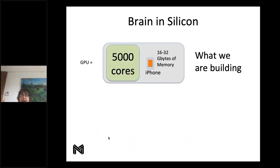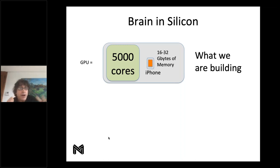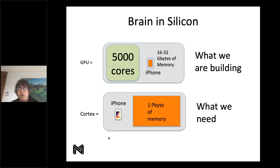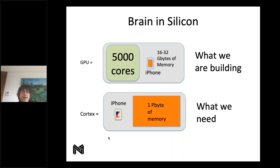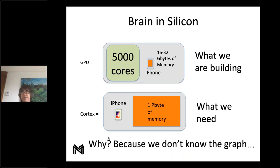So what is this brain in silicon that we're building? What we're building has a petaflop of compute applied to a cell phone's worth of memory. But what our brain actually uses — if we want to mimic it — is a cell phone's worth of compute applied to a petabyte of memory. We're building essentially the exact opposite of what we need. Even if I'm wrong by a couple of orders of magnitude, it's still the same story. We don't know the graph — we don't know what the network needs to look like to do this kind of computation.